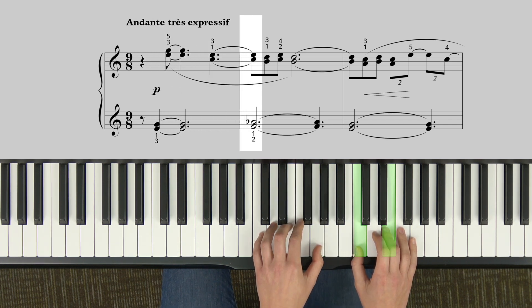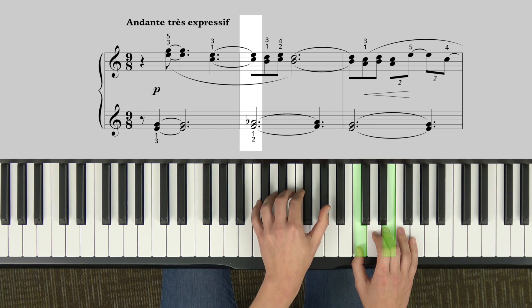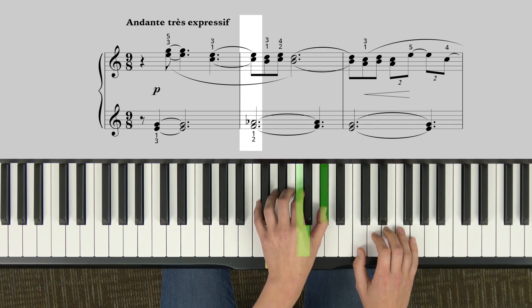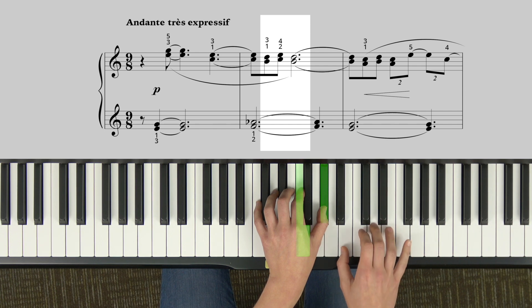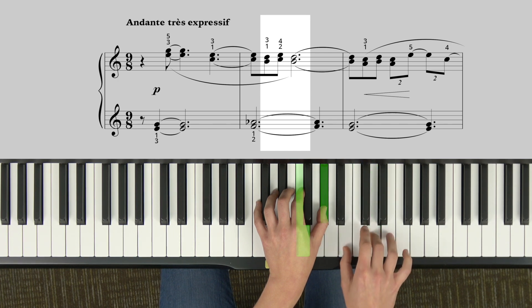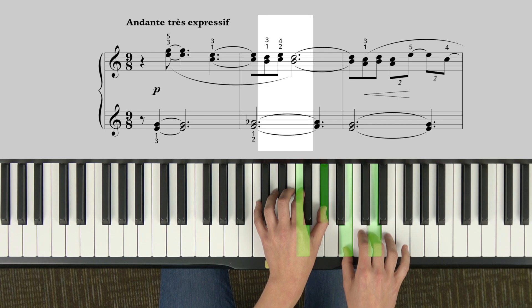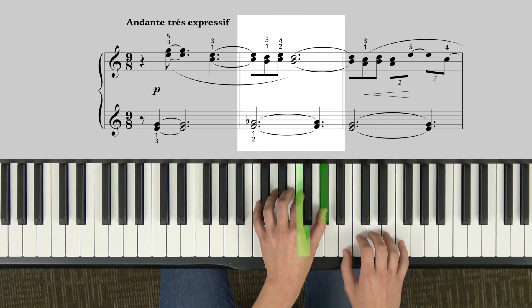So we have left hand hold, hold. The next measure. The left hand will come up to A flat and F, one and two finger. And then the right hand will shift down a step and play parallel thirds. One and three, four and two, one and three. So you play left hand.